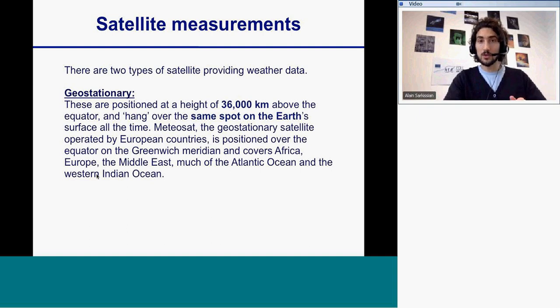I will show that there are mainly two types of satellites. The geostationary at 36,000 kilometers above the equator, showing the same spot on the Earth's surface all the time.